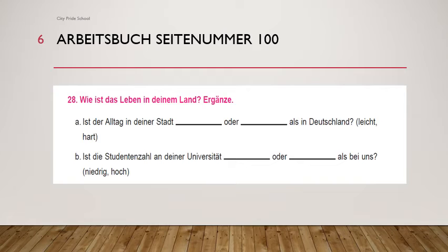In the case of leicht, only -er is added. But in the case of hart, umlaut and -er both are added. So hart → härter als → am härtesten, because it ends with T so -ESTEN is added. Just note down the comparative and superlative forms of difficult adjectives so that before the exam you can revise them.